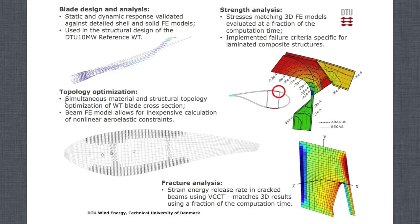That work focused on simultaneous material and structural topology optimization. Because you are able to represent the 3D response based only on a 2D mesh, you have a significant gain in computational efficiency. We were able to extend beyond structural topology to also consider the material distribution — including the distribution of different laminates or laminates in different directions, so we can determine optimal fiber directions. Future work will take advantage of the beam finite element model to handle non-linear aeroelastic constraints during optimization.